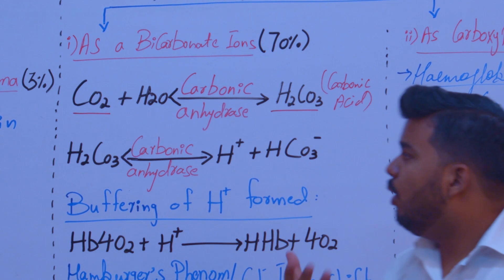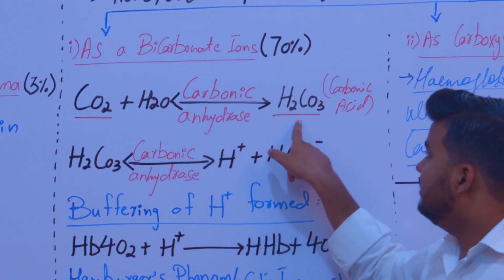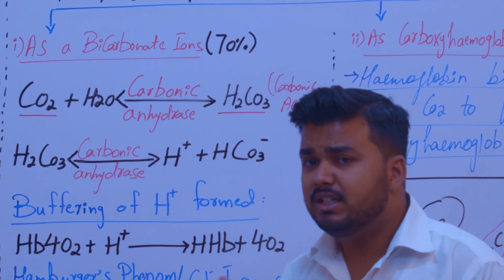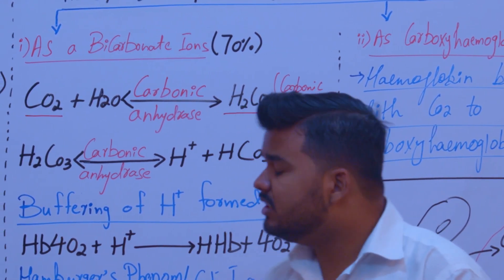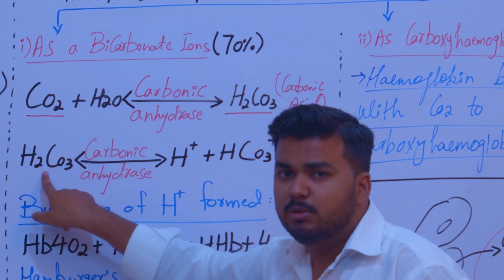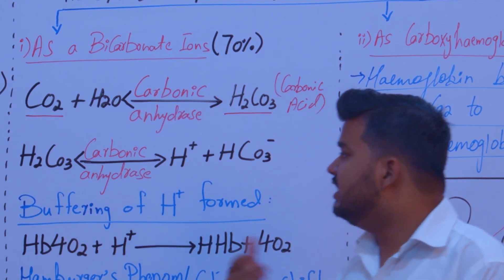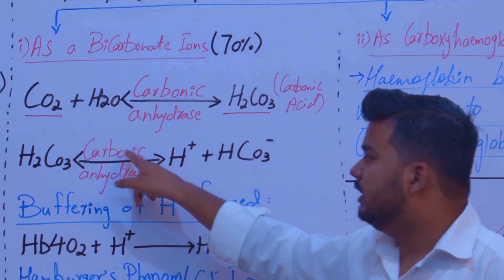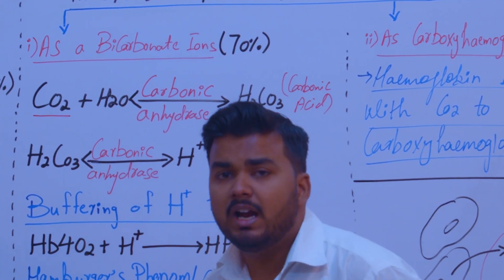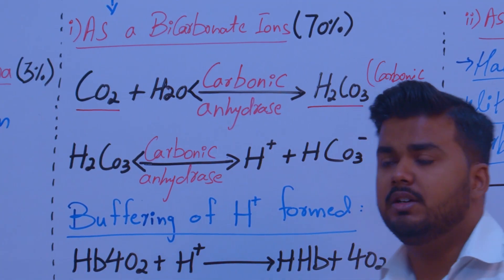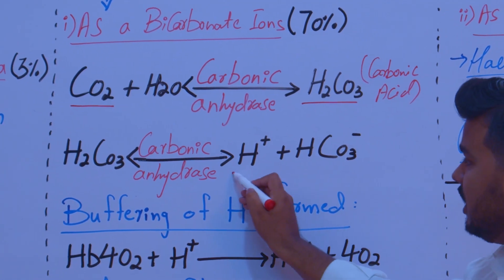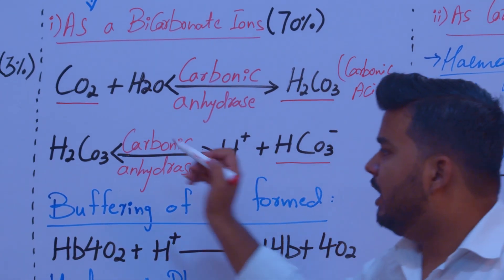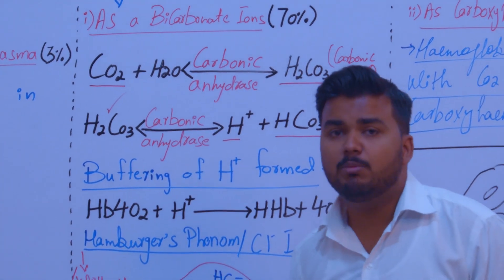Carbonic acid is an unstable compound. This unstable carbonic acid then dissociates into ions: bicarbonate ions (HCO3-) and hydrogen ions (H+). So by the dissociation of carbonic acid, we get hydrogen ions and bicarbonate ions.